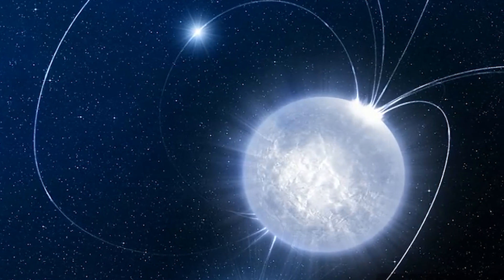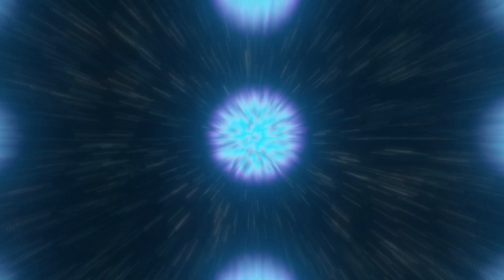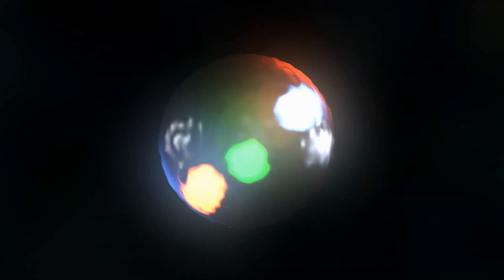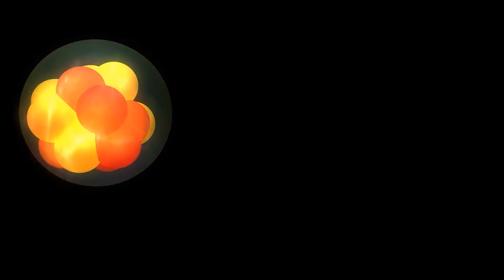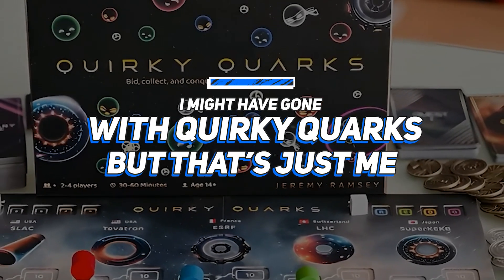This could lead to the formation of a quark star, even smaller and denser than a neutron star. As pressure builds inside a quark star, strange quarks might appear in its core. They've been called strange because they don't behave like normal quarks. I might have gone with quirky quarks, but that's just me.